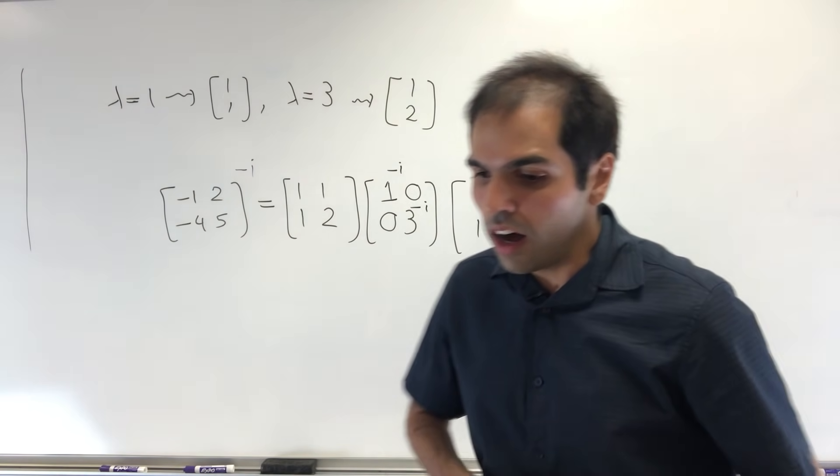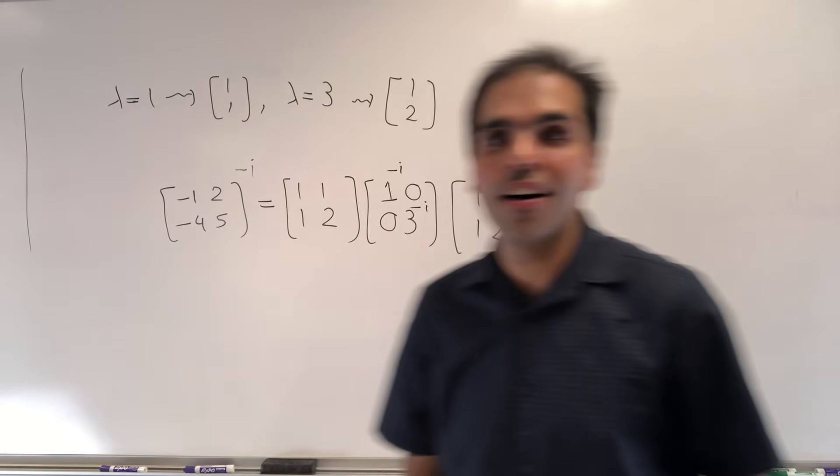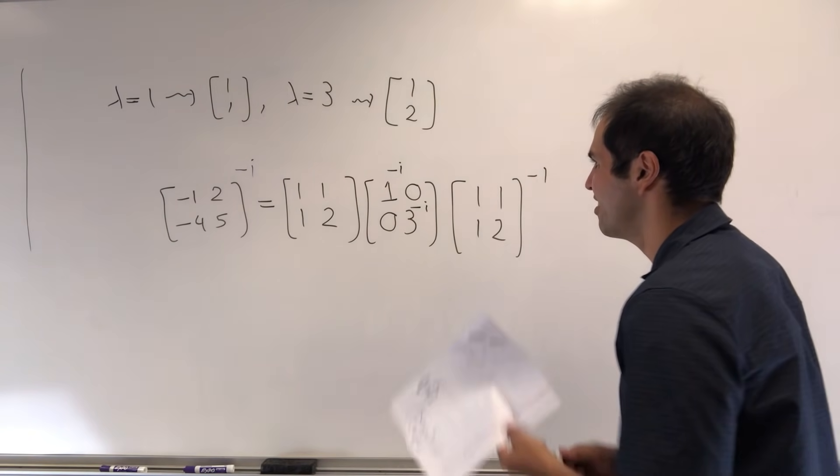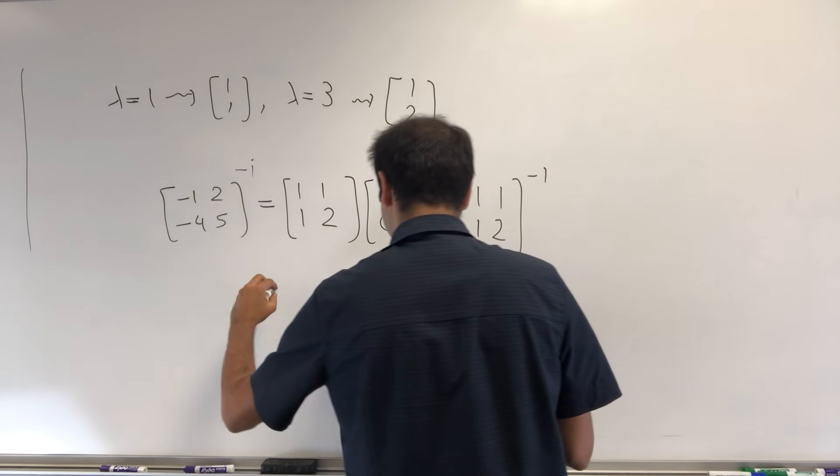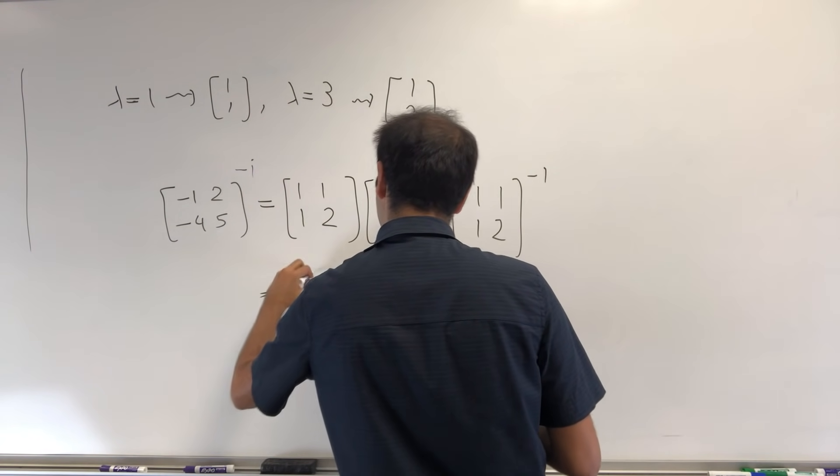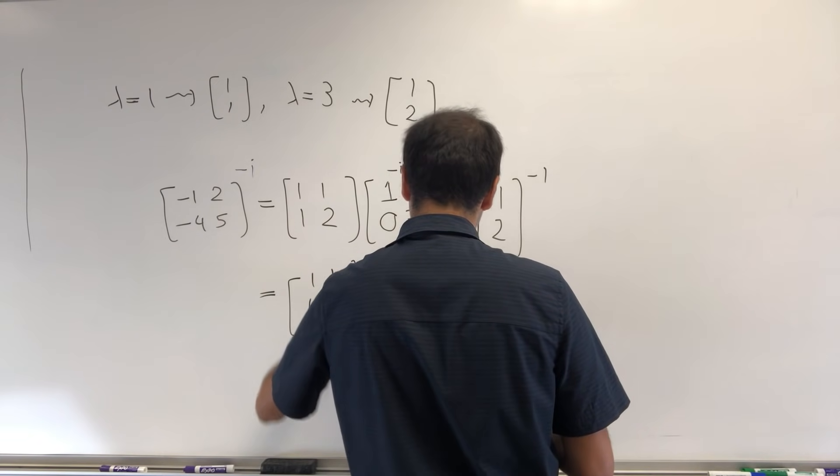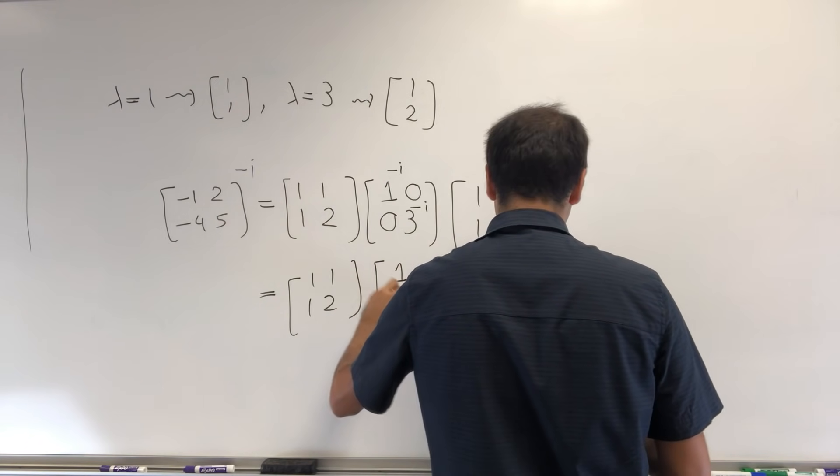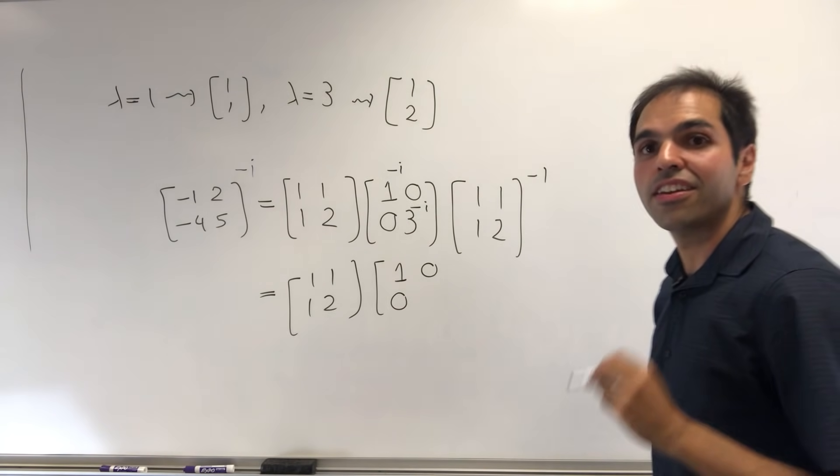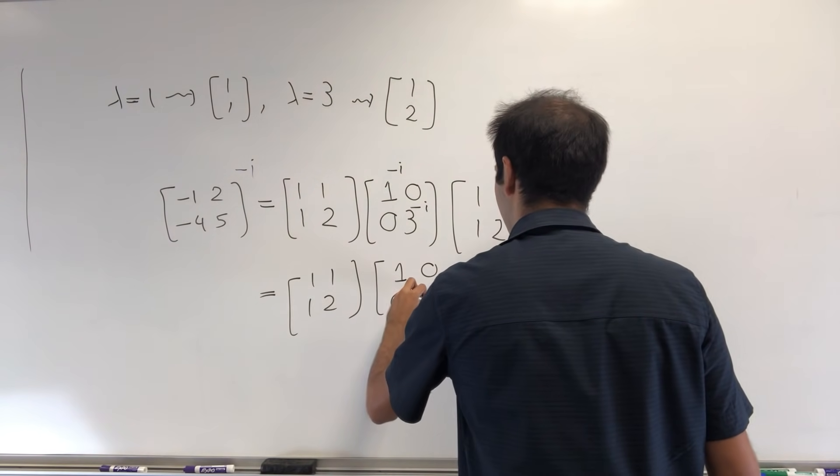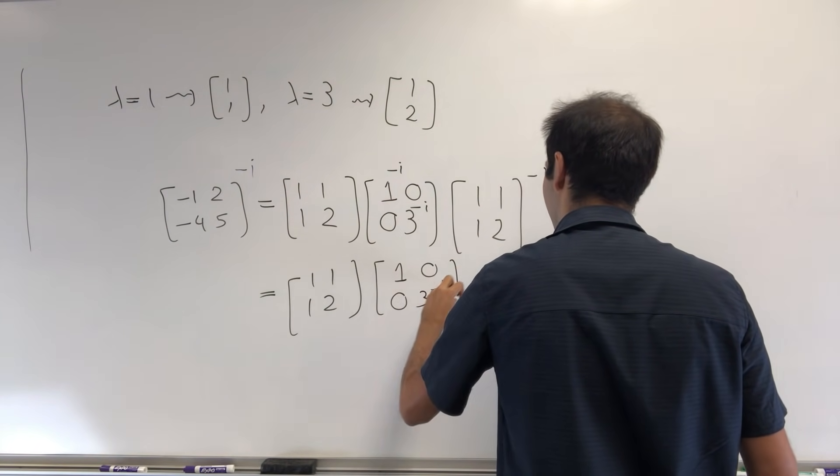Now, what is 1 to the minus i? Well, it's 1. Okay, just for simplicity: [1, 1; 1, 2] times [1, 0; 0, 3^(-i)]. I'll talk about this in a second, but for now, I assume it's just 3 to the minus i.